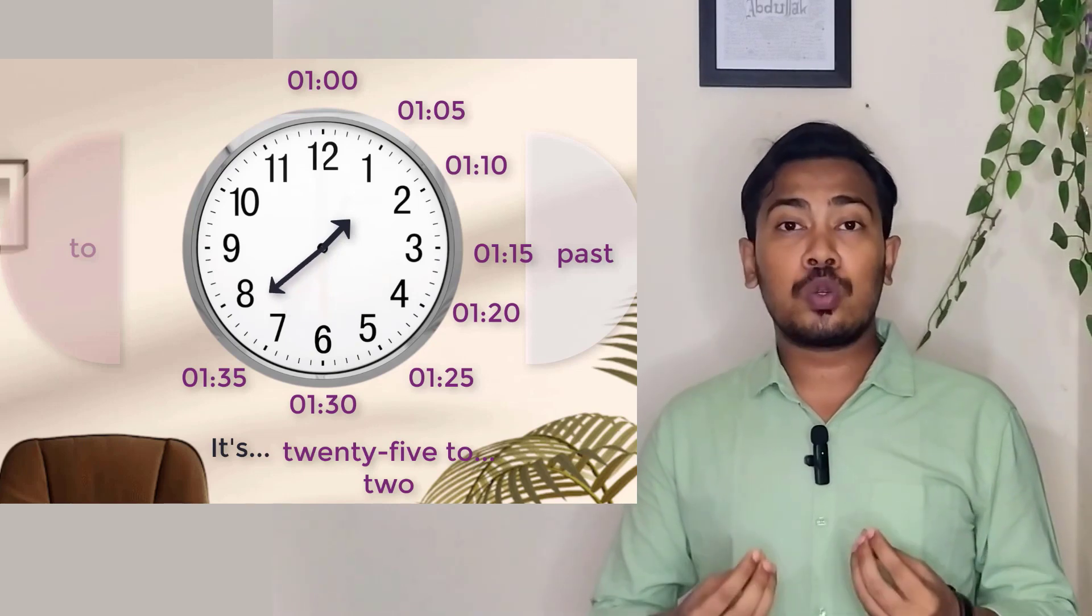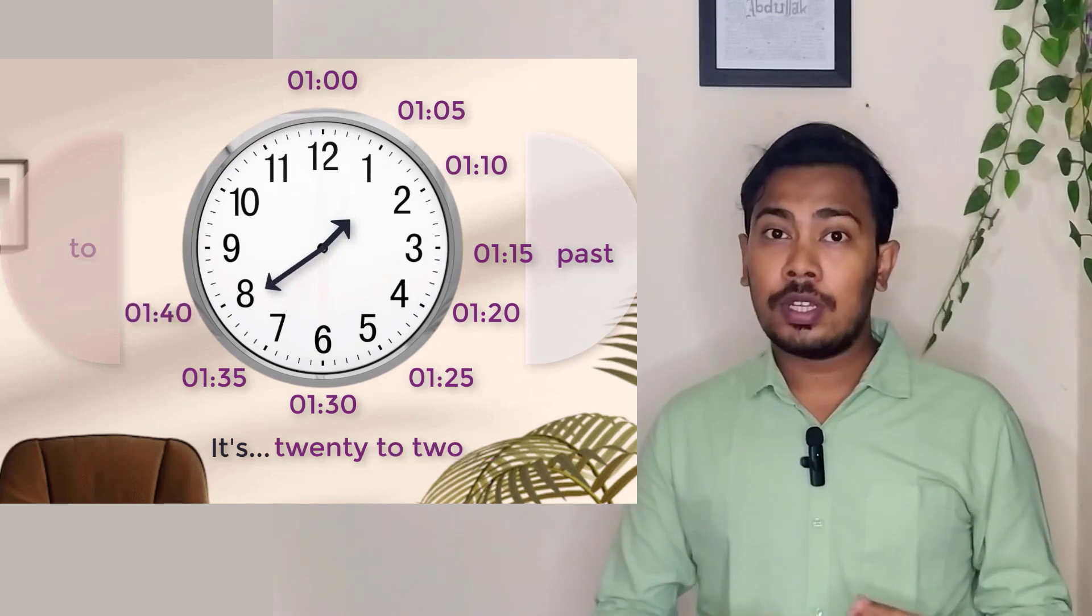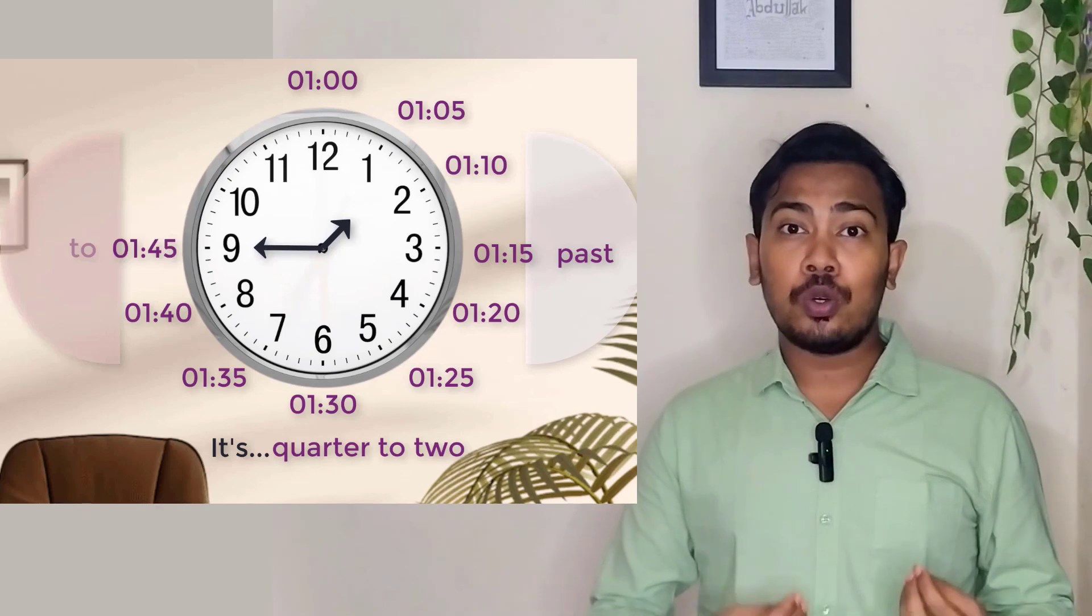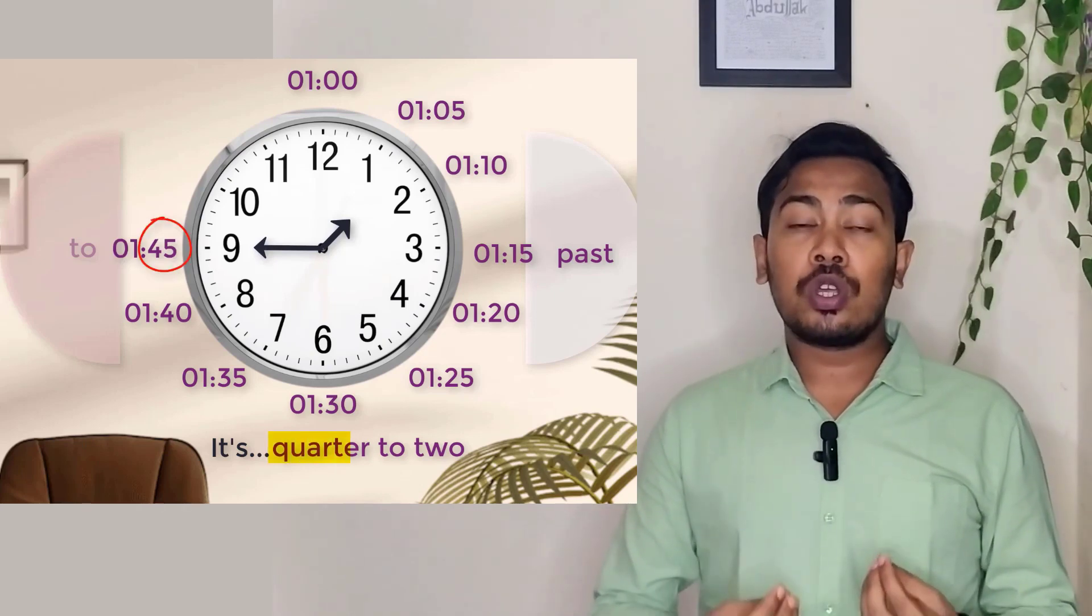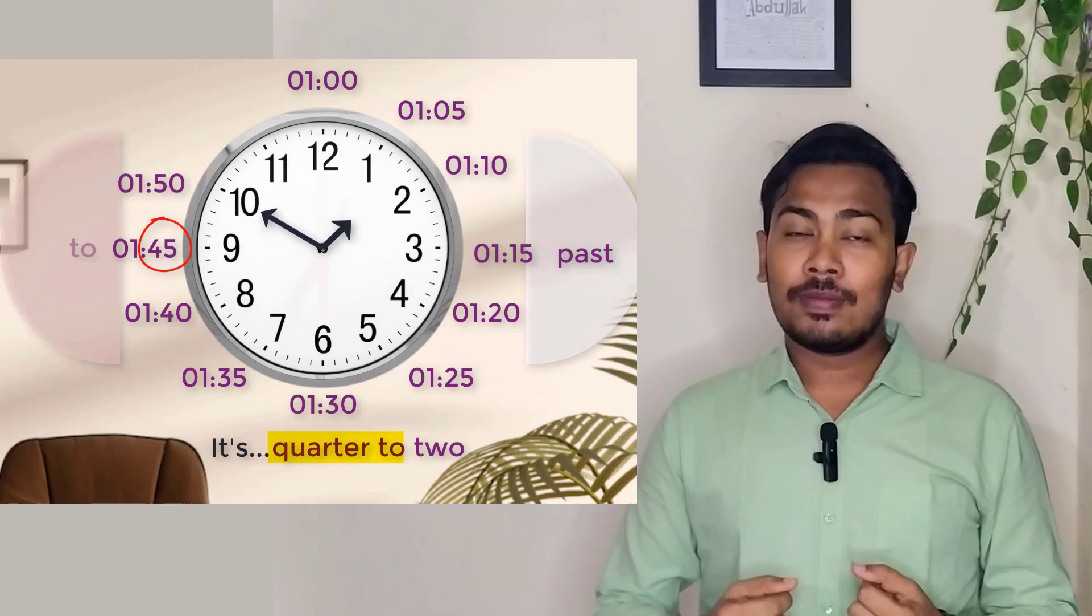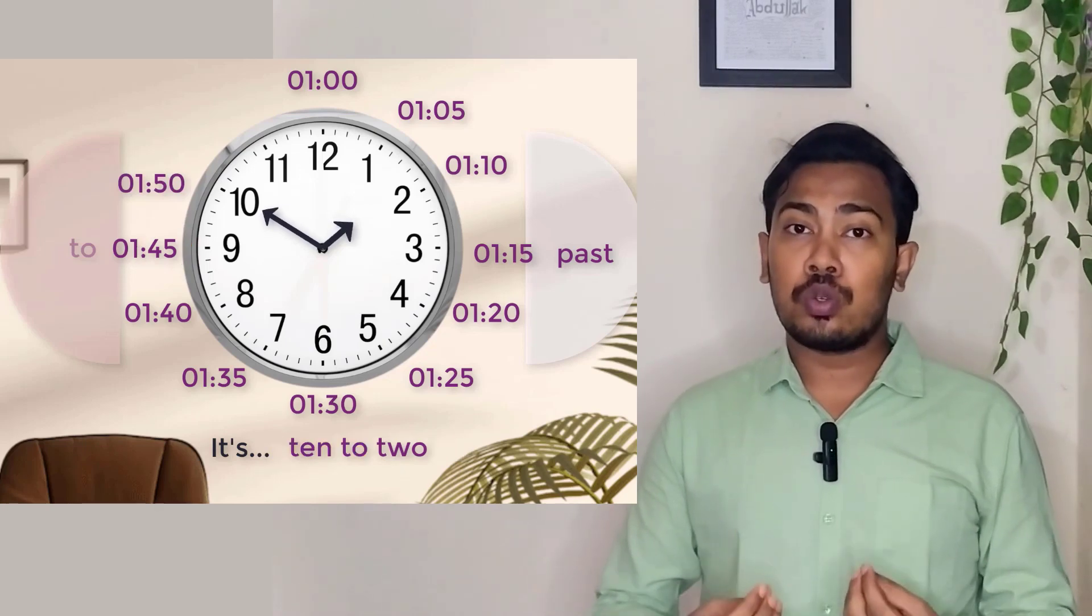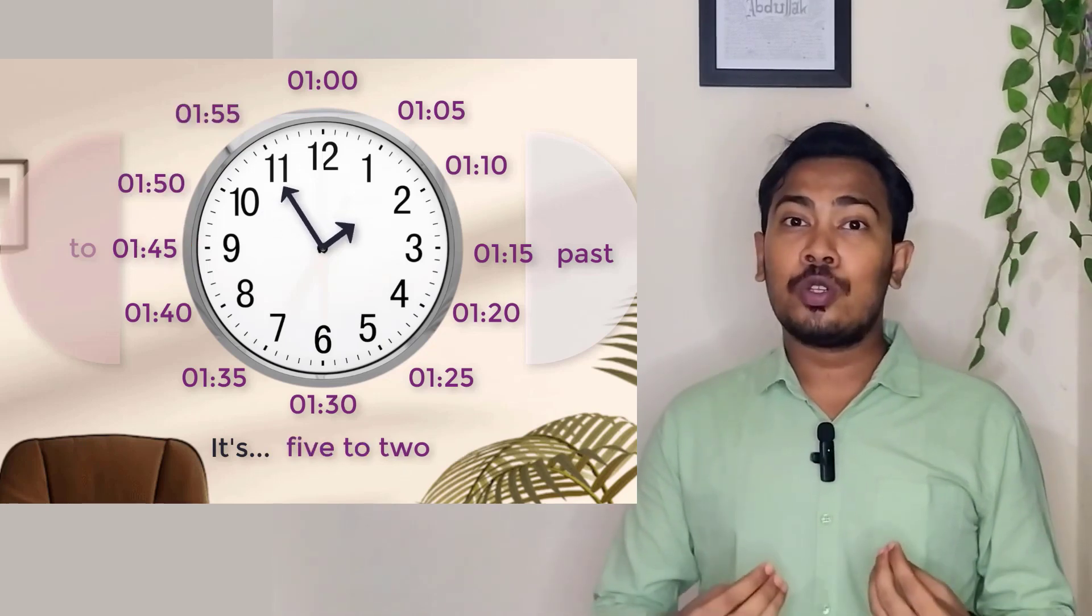Now let's go. It's 25 to 2. It's 20 to 2. It's quarter to 2. 45 is always quarter to. It's 10 to 2. It's 5 to 2.